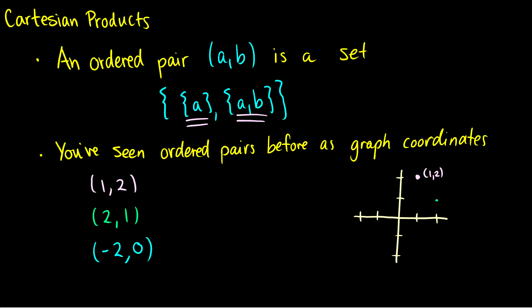For (2,1), you would go two on the x, one on the y, and you'd end up at this point. And for (-2,0), you would go two on the x-axis in the left direction, zero up or down, and you'd end up at this point.